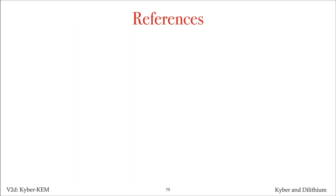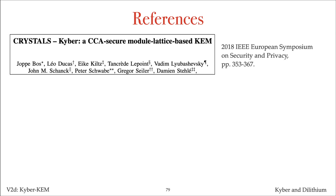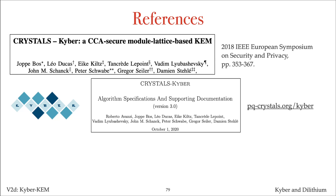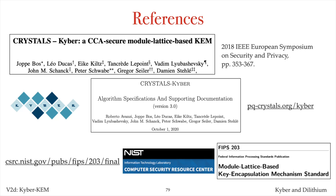The primary references used for the Kyber videos are: first, the research paper that introduced Kyber, published in the Proceedings of the 2018 IEEE European Symposium on Security and Privacy; second, the Kyber specification submitted to NIST, available on the Crystals-Kyber webpage along with software and other resources; and third, the recently published NIST standard FIPS 203. The design of Kyber was influenced by works of many cryptographers over the past three decades, and the main contributions can be traced from the references in these three sources.